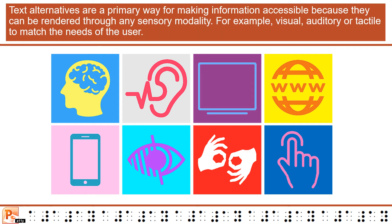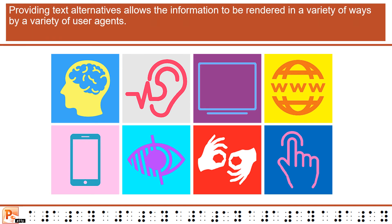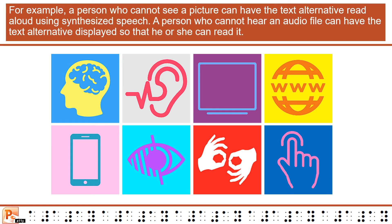Text alternatives are a primary way of making information accessible because they can be rendered through any sensory modality — visual, auditory, or tactile — to match the needs of the user. Providing text alternatives allows the information to be rendered in a variety of ways by a variety of user agents. For example, a person who cannot see a picture can have the text alternative read aloud using synthesized speech. A person who cannot hear an audio file can have the text alternative displayed so that he or she can read it.